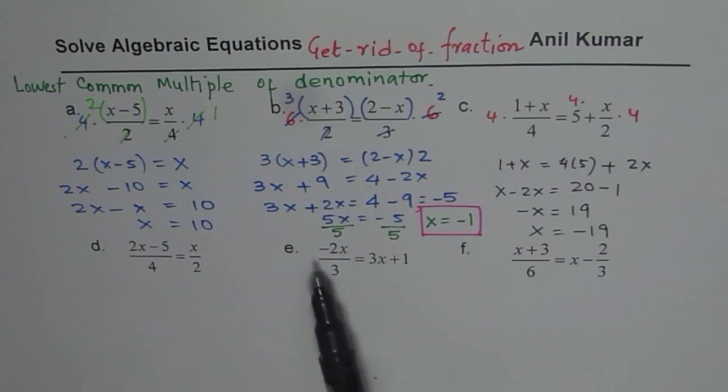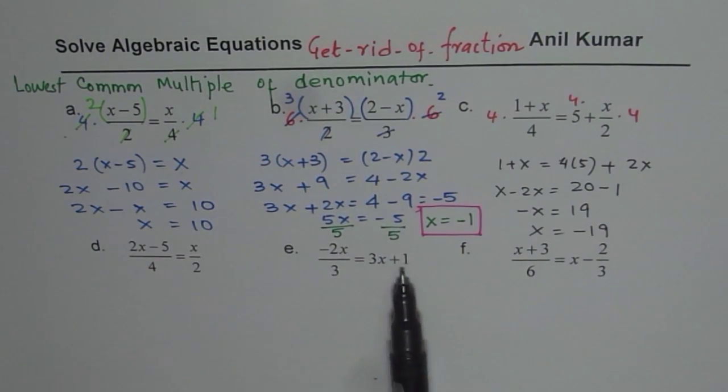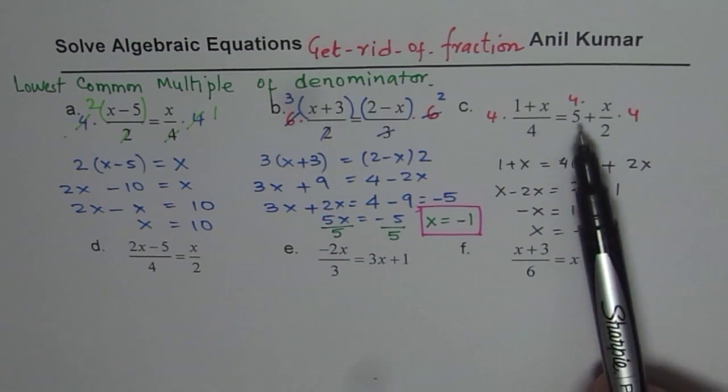Correct? And you get this as minus 2x equals to 3 times 3x plus 1. Solve as we did. In this case, follow this same process.